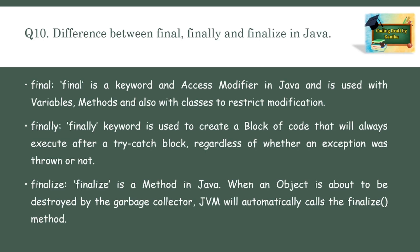The last question is: what is the difference between final, finally, and finalize in Java? 'final' is a keyword and access modifier used with variables, methods, and classes to restrict modification. When used with variables, it makes the variable a constant. When used with methods, it prevents the method from being overridden. When used with classes, it prevents the class from being inherited.